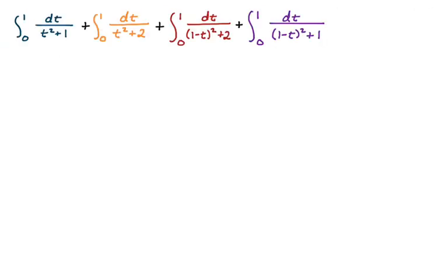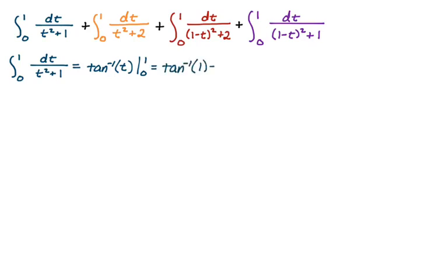Now we need to evaluate all four integrals — there's going to be a lot of arctan involved. The first one is the classic arctan form: the integral of dt over t squared plus 1 from 0 to 1 is just arctan evaluated from 0 to 1. That gives arctan(1) minus arctan(0), which is pi over 4 minus 0, so pi over 4.